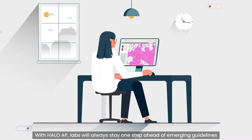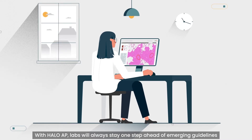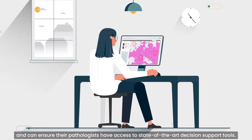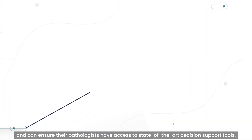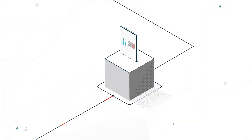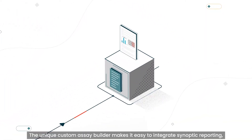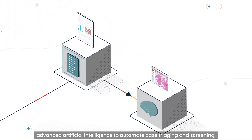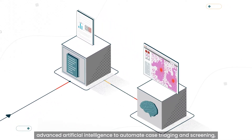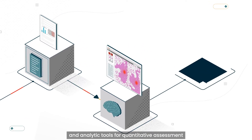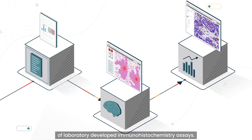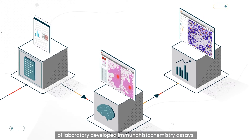With Halo AP, labs will always stay one step ahead of emerging guidelines and can ensure their pathologists have access to state-of-the-art decision support tools. The unique custom assay builder makes it easy to integrate synoptic reporting, advanced artificial intelligence to automate case triaging and screening, and analytic tools for quantitative assessment of laboratory-developed immunohistochemistry assays.